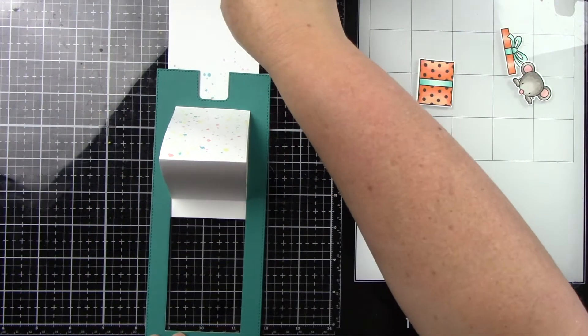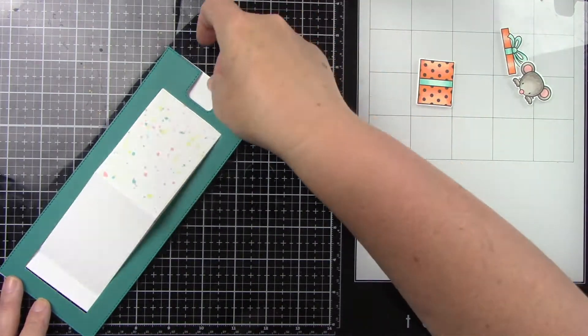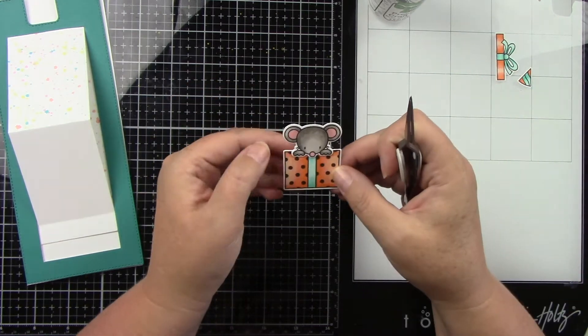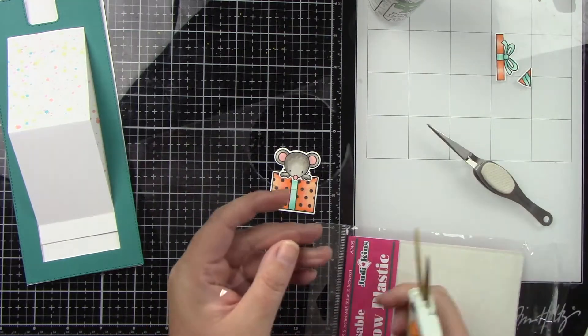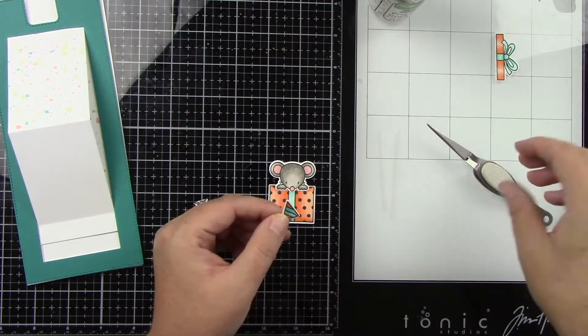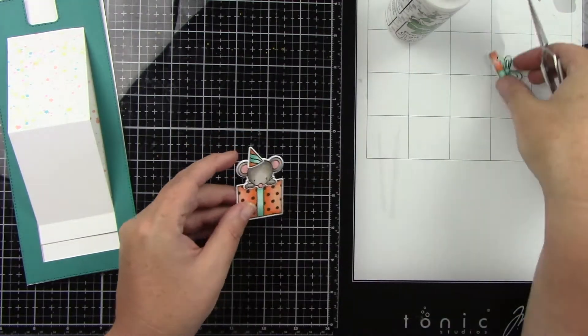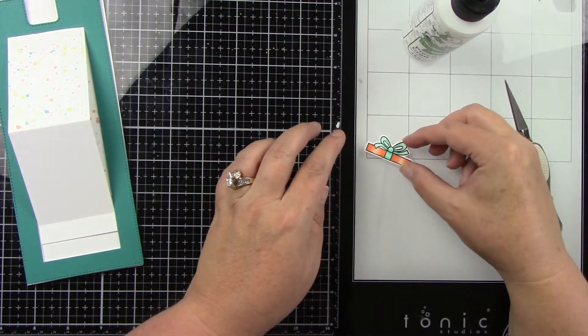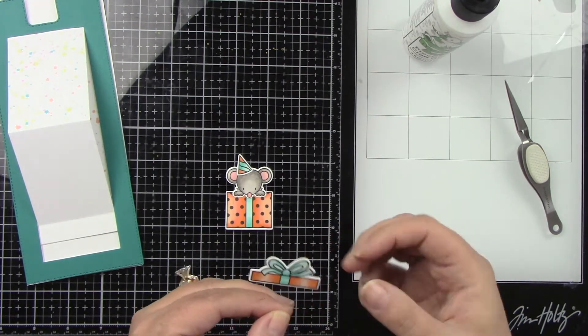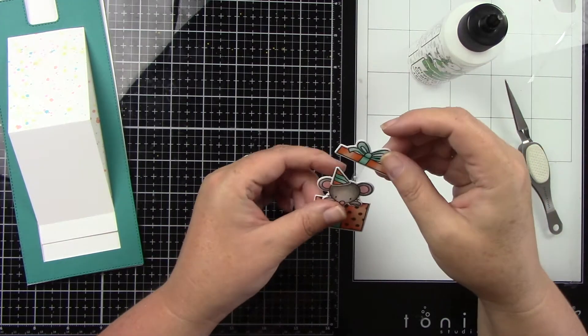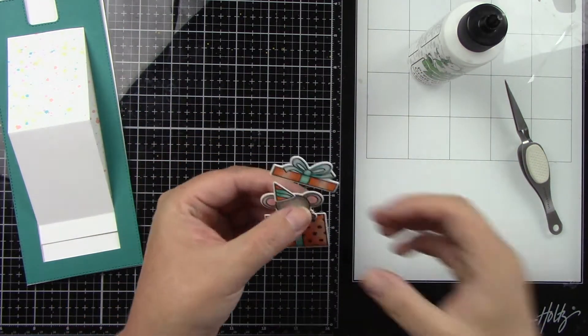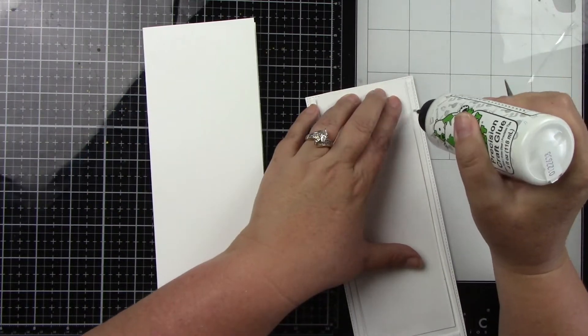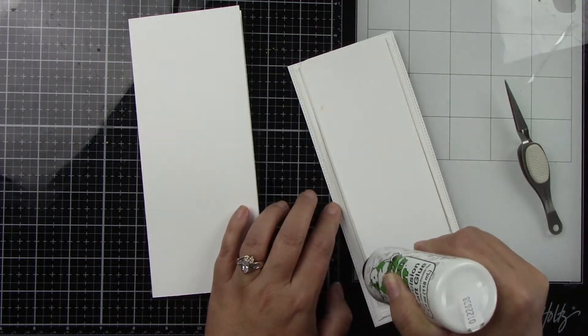My plan was to stamp a sentiment on that top part that has all the splatter, and adhere these little guys to that bottom part, but it's going to stick up past where it bends. That doesn't work. I brought in some acetate because I want the lid to the birthday present to look like it just popped off, like the cute little mouse is popping out of the box. I only ended up using one piece of acetate to have that floating behind him. This is where I want him to be.